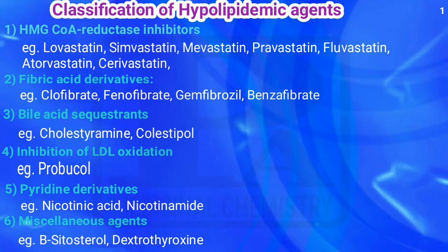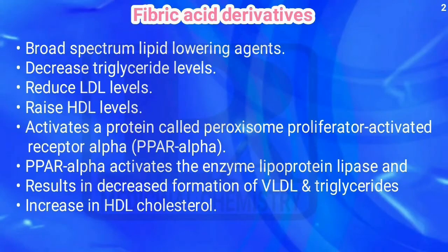The third one is bile acid sequestrants; examples are cholestyramine and cholestipol. The fourth one is inhibition of LDL oxidation; example is probucol. The fifth one is pyridine derivatives; examples are nicotinic acid and nicotinamide. The last one is miscellaneous agents; examples are beta-sitosterol and dextrothyroxine.